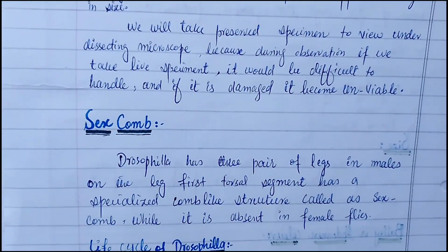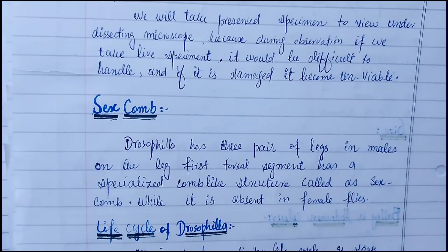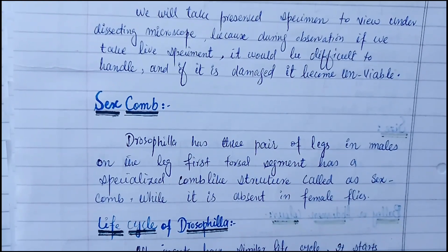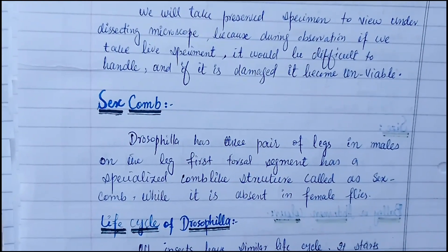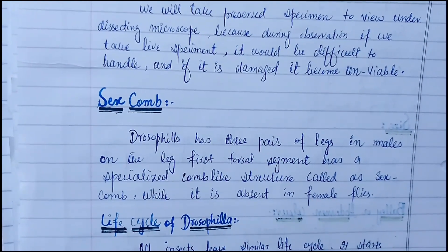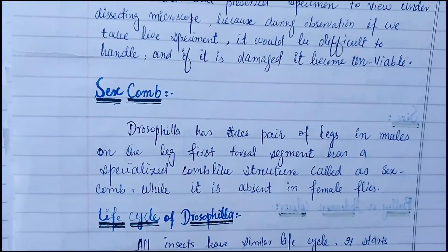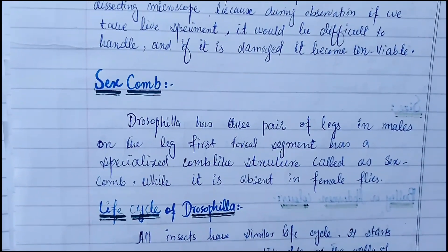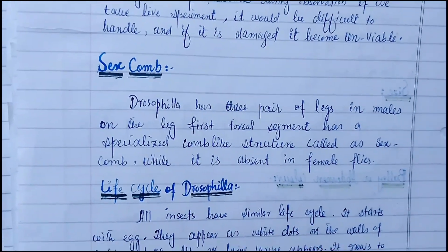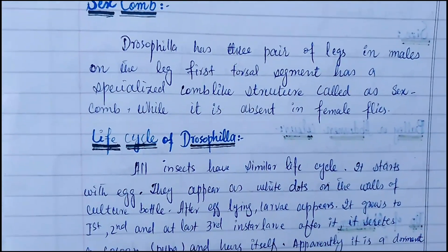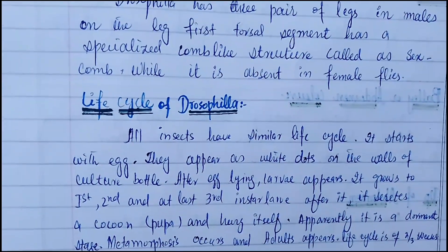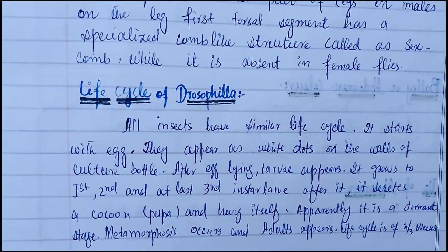The next difference is the sex combs. Drosophila has three pairs of legs. In the male, on the first leg, the first tarsal segment has a specialized comb-like structure called sex combs, while it is absent in female flies.